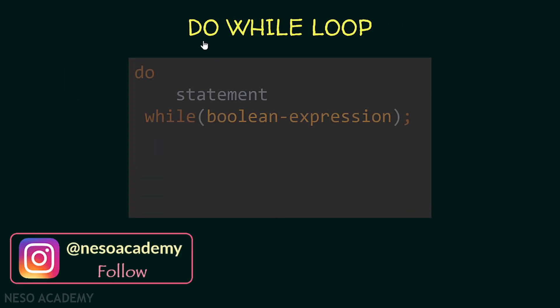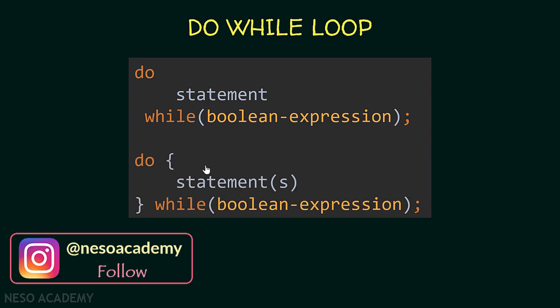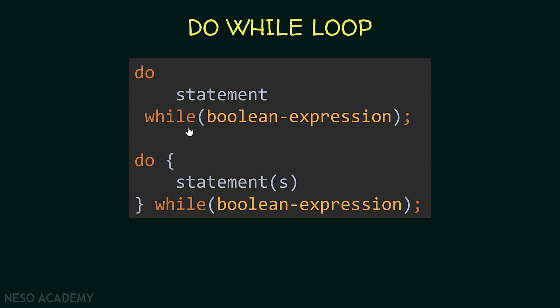To write a do-while loop in Java, we use the do keyword and then put our statement or statements inside braces. After that, we use the while keyword followed by the condition. Finally, we have a semicolon — and if you don't put this semicolon, you will get a syntax error.